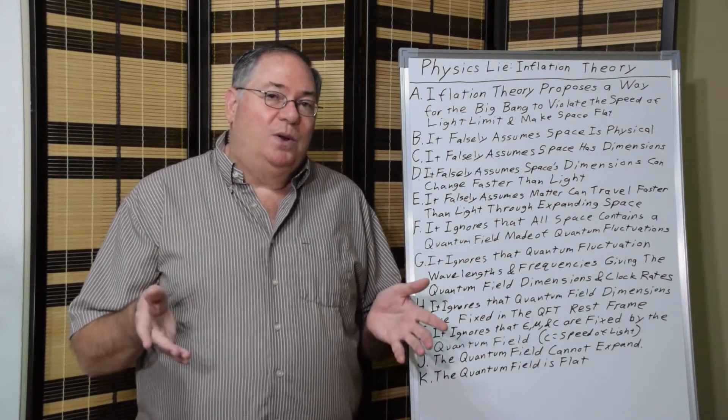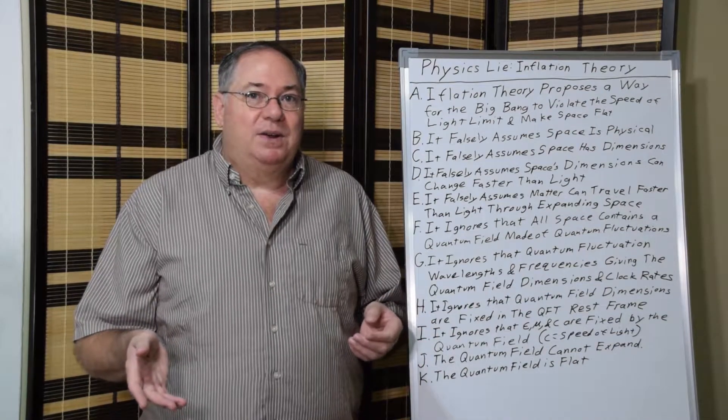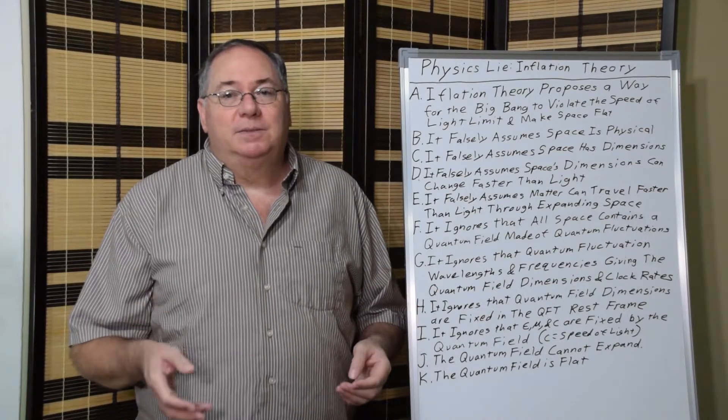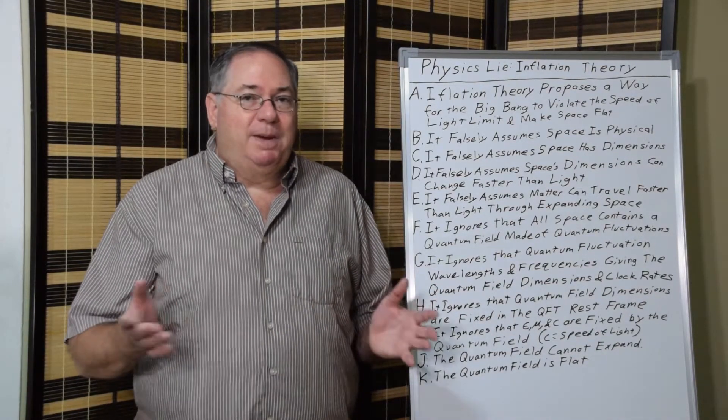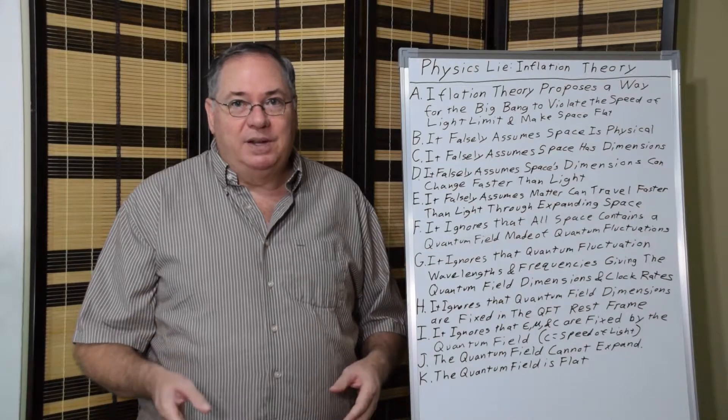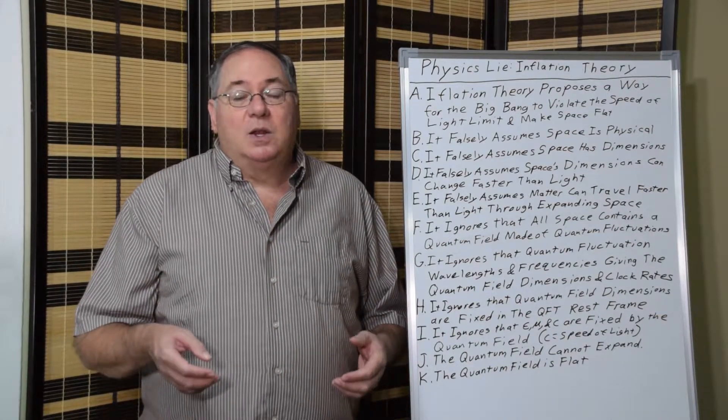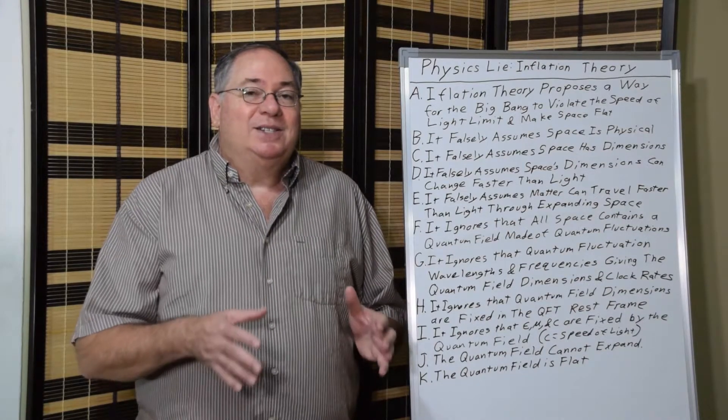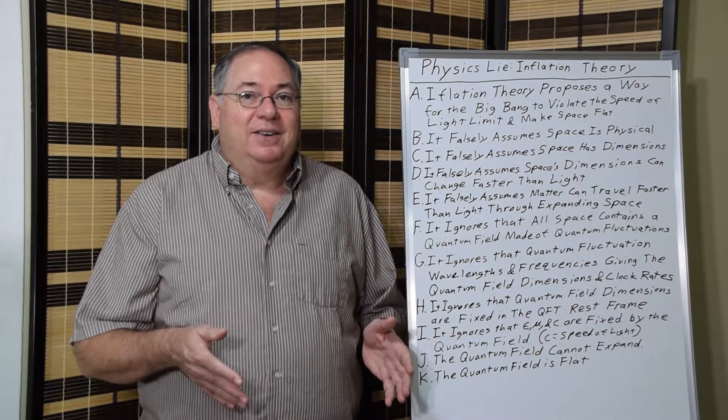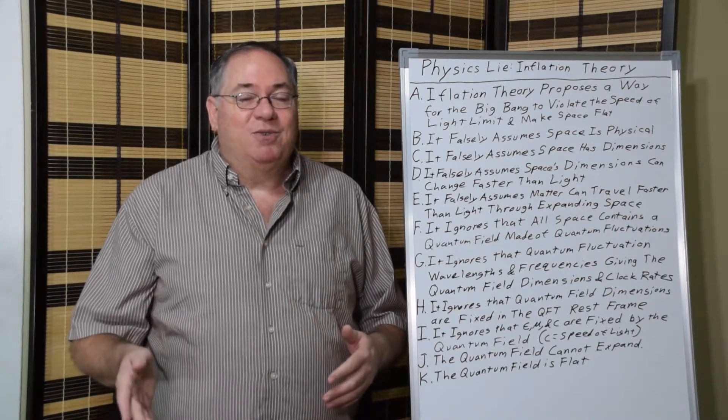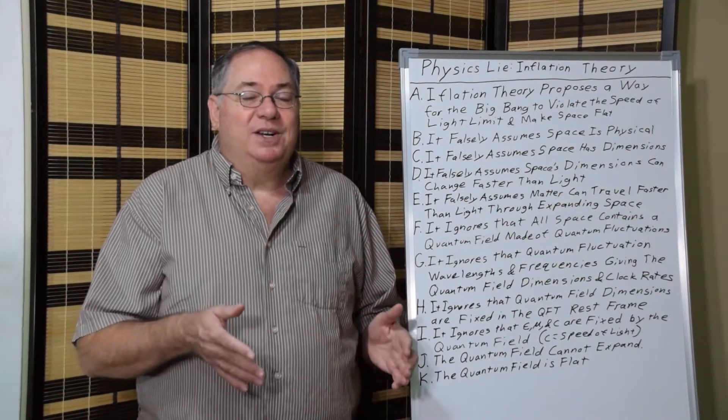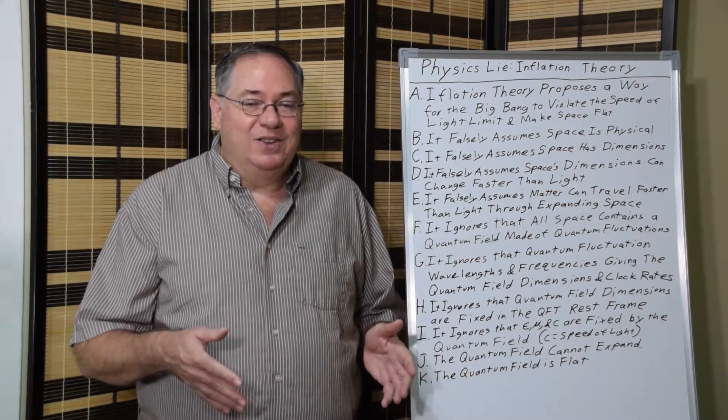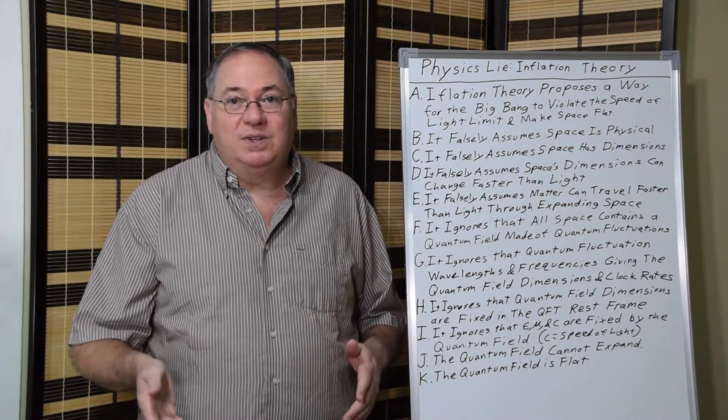And in the real world what we have is a quantum field exists in all known space. Every space we know has quantum field. Quantum field contains quantum fluctuations. And this is actually one of the bad things about inflation theory is they actually do consider quantum field theory. But they don't consider quantum fluctuations I guess. And they don't consider that quantum fluctuations have wavelengths and frequencies.